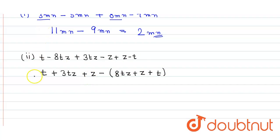So here we can simply say that t - t will be equal to zero, plus again z - z will be equal to zero, and here 3tz - 8tz will be equal to minus 5tz. And that will be equal to minus 5tz, and that's the answer of the second part.